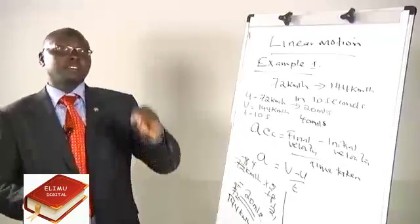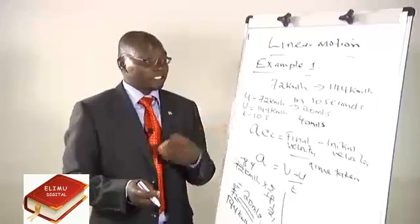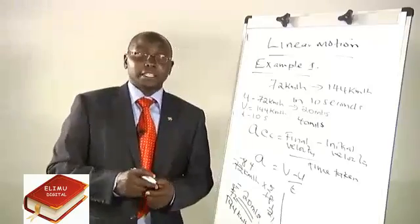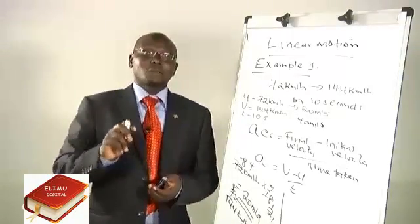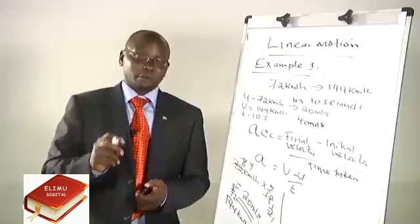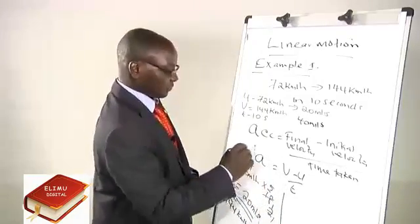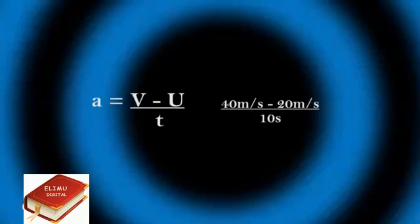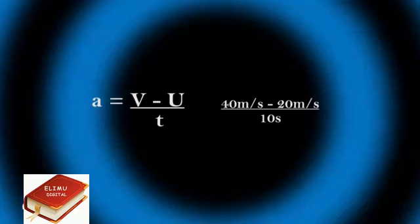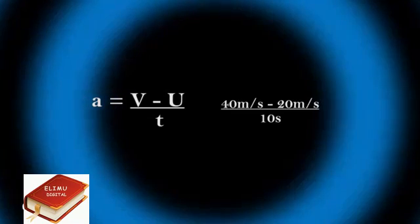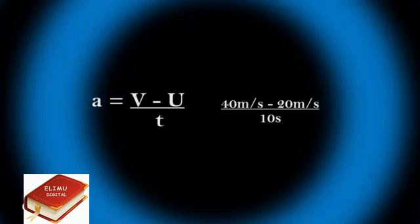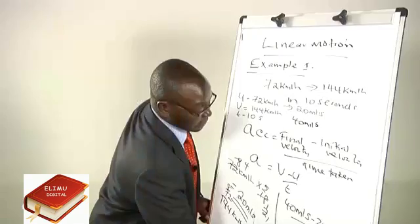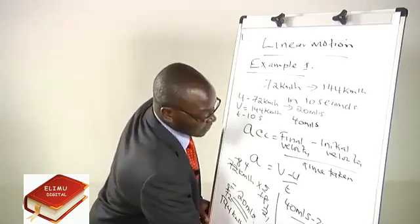Now we have the initial velocity and the final velocity in the right units, and we have the time. We do not need to convert time since the SI unit for time is already seconds. Substituting into our equation: acceleration equals 40 meters per second minus 20 meters per second, divided by 10 seconds. 40 minus 20 is 20, divided by 10 gives us 2 meters per second squared.